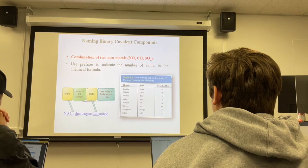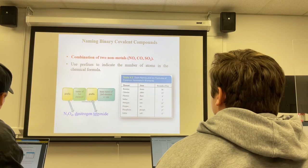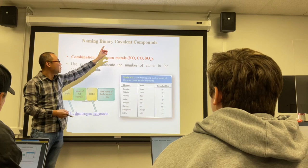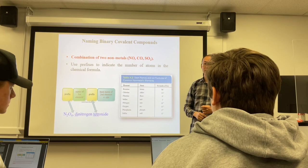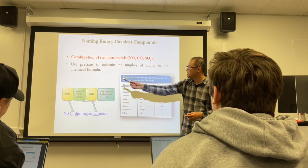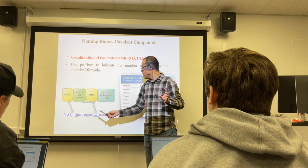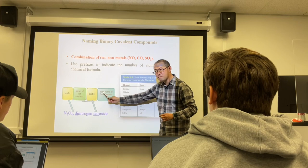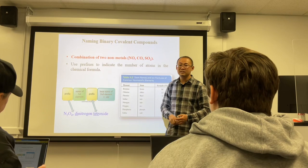The stem names for the second element: bromine → bromide, fluorine → fluoride, chlorine → chloride, iodine → iodide, nitrogen → nitride, oxygen → oxide, phosphorus → phosphide, sulfur → sulfide. The prefixes are: mono- (1), di- (2), tri- (3), tetra- (4), penta- (5), and so on.